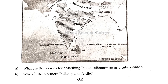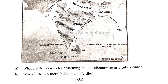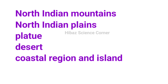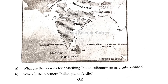Here are some of the features of the North Indian Plains. Mountains, Plateau, Triangle, Height, Desert — including the Thar Desert. Main vegetation: Shrub and Cactus Plant. Coastal Land and Islands, including the Andaman and Nicobar.